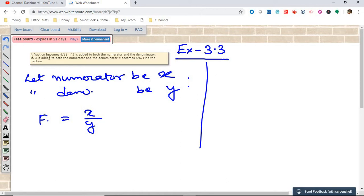Now come to the question. A fraction becomes 9 by 11. So x plus 2 by y plus 2, because 2 is added to both the numerator and denominator, the fraction becomes 9 by 11. This is our first equation.